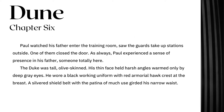Dune, Chapter 6: 'Paul watched his father enter the training room, saw the guards take up stations outside. One of them closed the door. As always, Paul experienced a sense of presence in his father — someone totally here. The Duke was tall, olive-skinned. His thin face held harsh angles, warmed only by deep grey eyes. He wore a black working uniform with a red armorial hawk crest at breast, a silver shield belt with the patina of much use girded his narrow waist.'